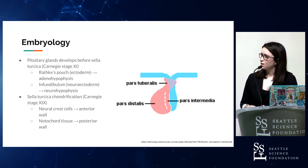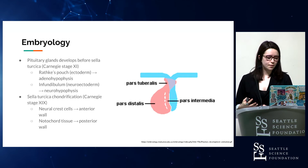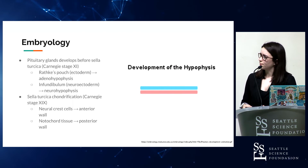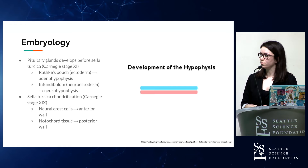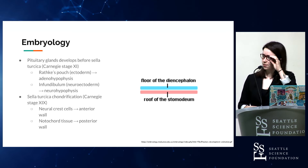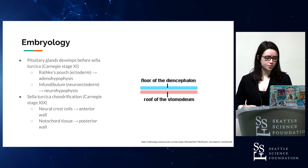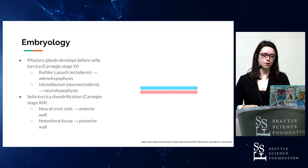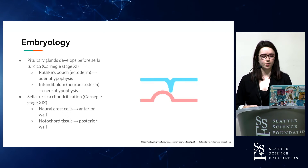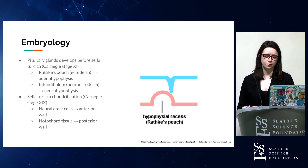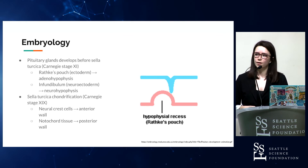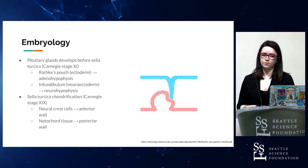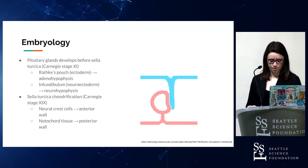In the second month of gestation, the sella turcica starts to form — its anterior wall forms from neural crest cells, and the posterior wall forms from notochord tissue. The second and third months of gestation are important for the sinus region embryologically because various venous channels below the pituitary gland, important for the inferior intercavernous sinus, have been observed in fetuses as young as 12 weeks' gestation.